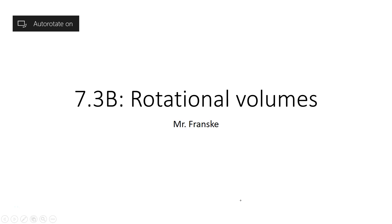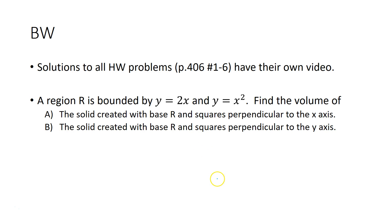Hey everyone, Mr. Franski here. We've already talked about volumes of similar cross-sections, and today we're going to talk about another way to create a volume by taking sections of a function — rotating things around an axis. First, we'll start with a little bell work. I made a separate video with solutions to all the homework problems — you can find it on Schoology. If you were struggling or want more practice on similar cross-sections before the quiz, that's a good spot to go.